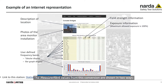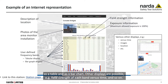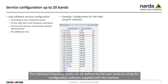The measurement values are shown in two ways, as a table and as a bar chart. Other displays are possible, for example, field strength of each band versus time and so on. The individual frequency bands can be defined by the user easily by using the configuration software supplied with the monitor.